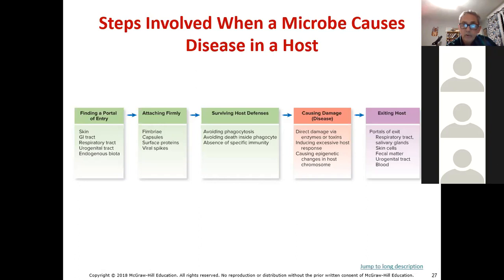Portals of exit include the respiratory tract, salivary glands, skin cells, fecal material, urogenital tract, and blood. These can all result not only in exit but in transmission of the disease.